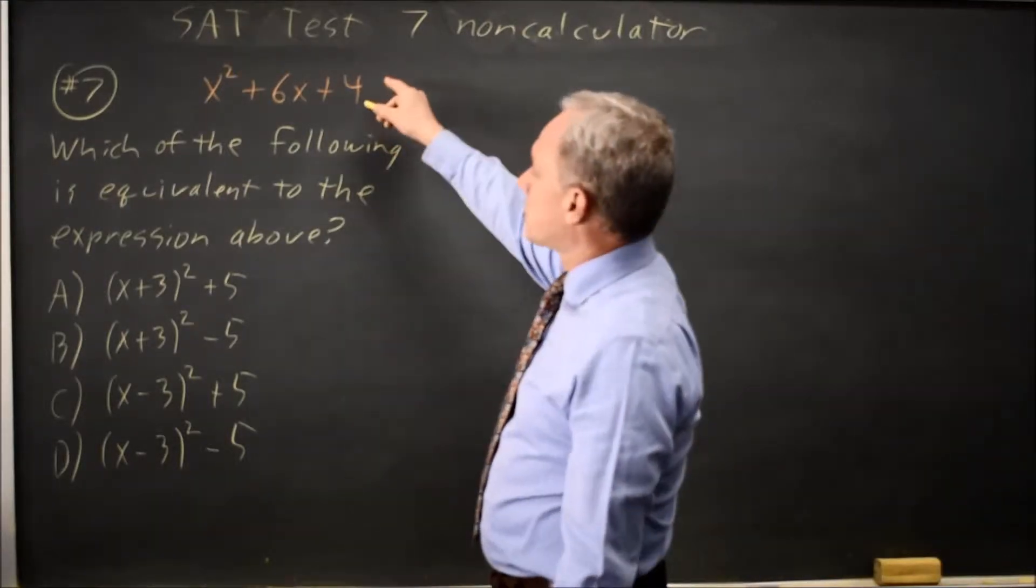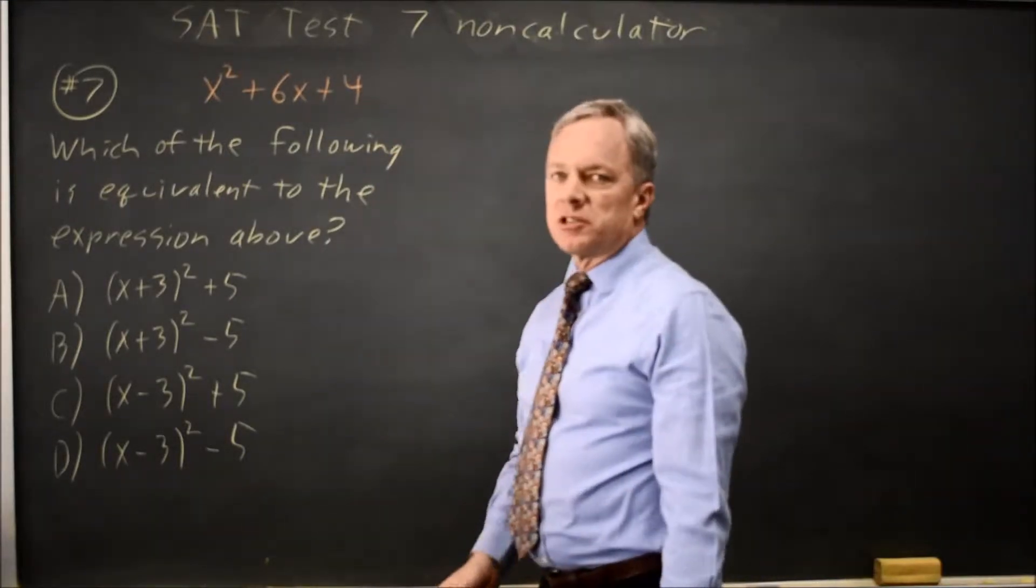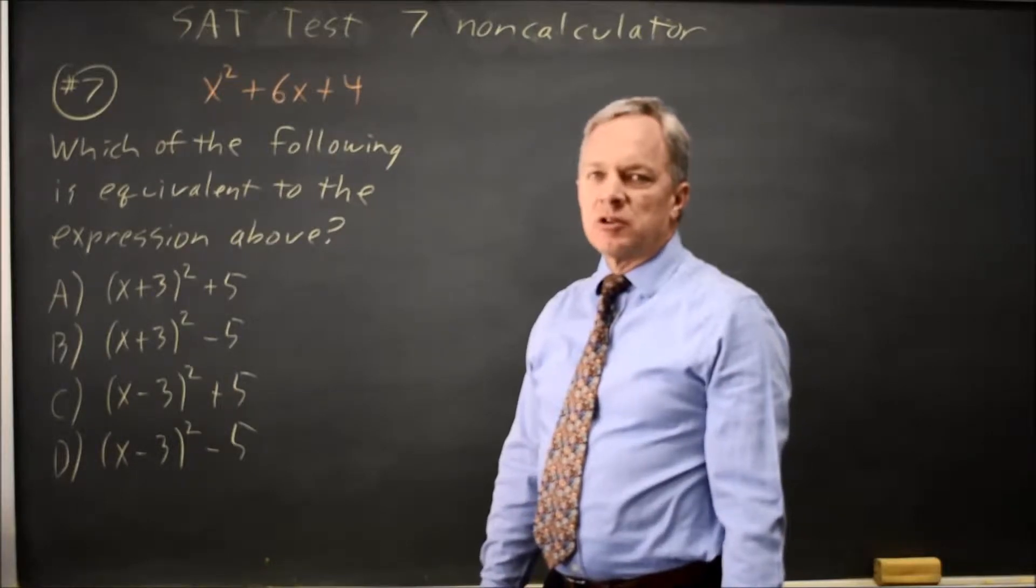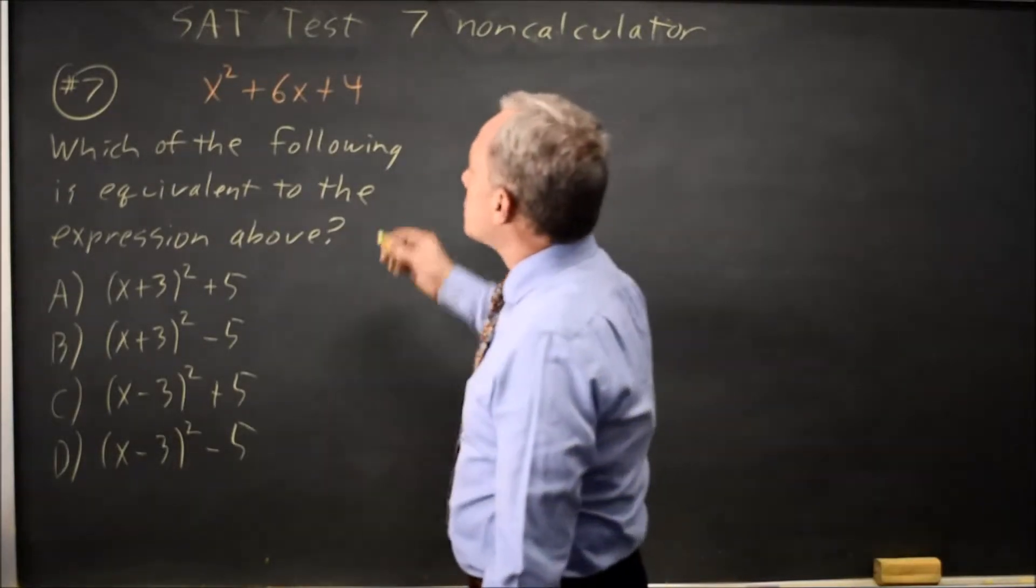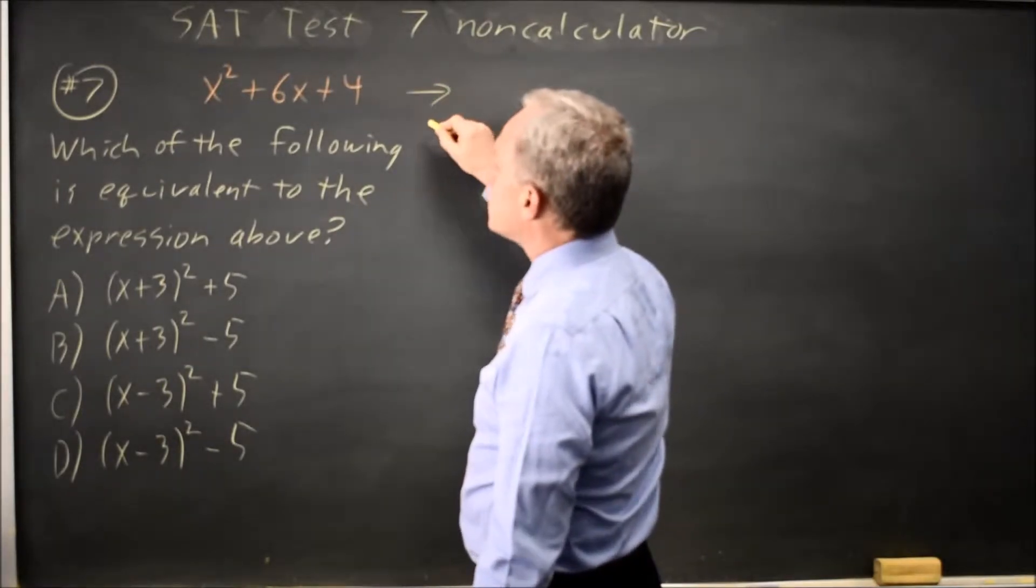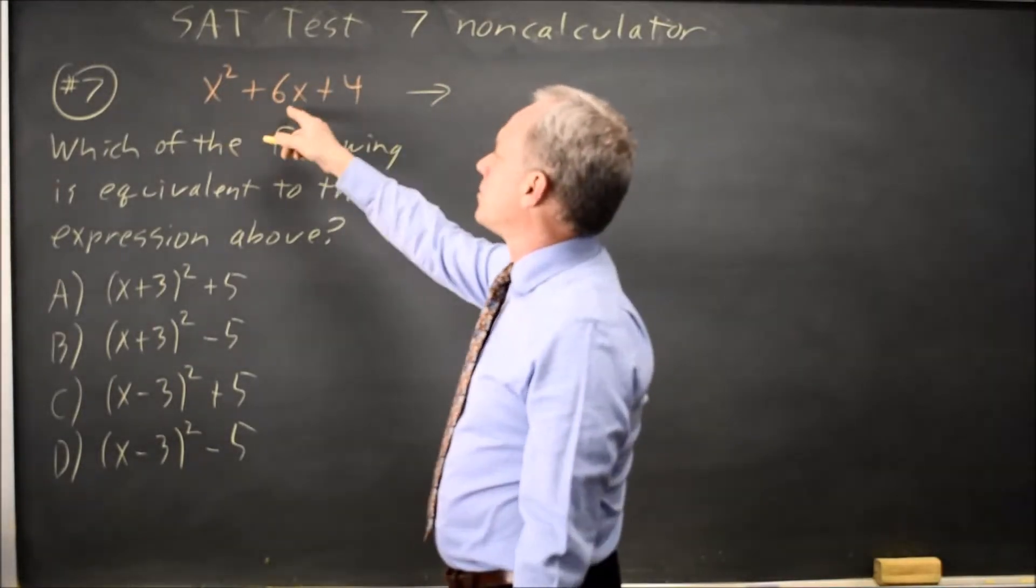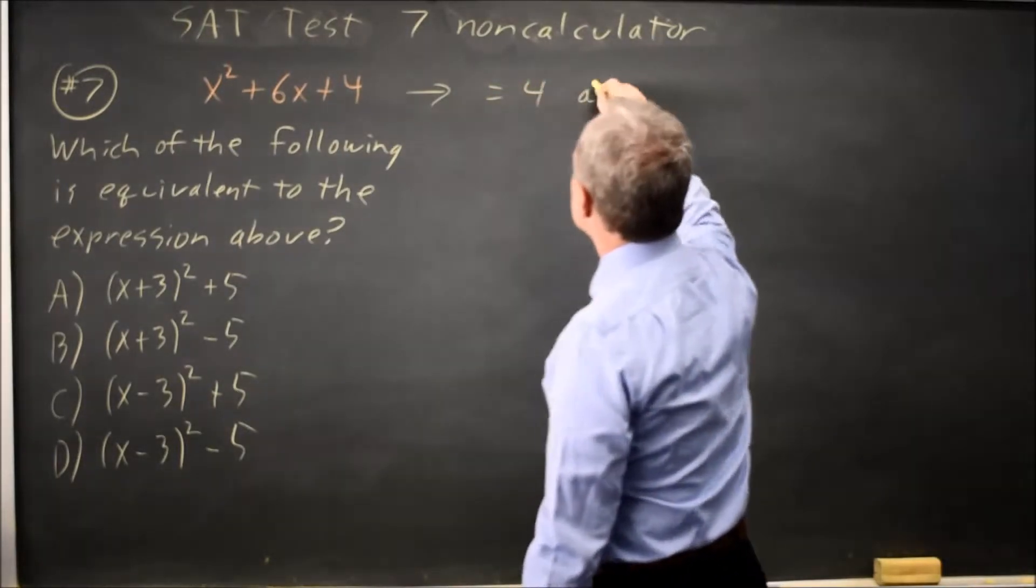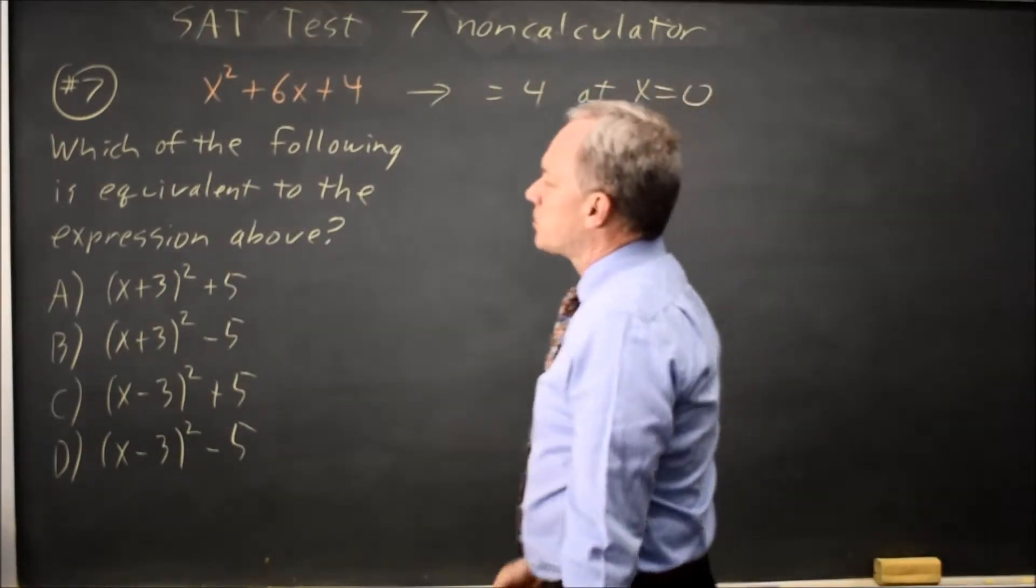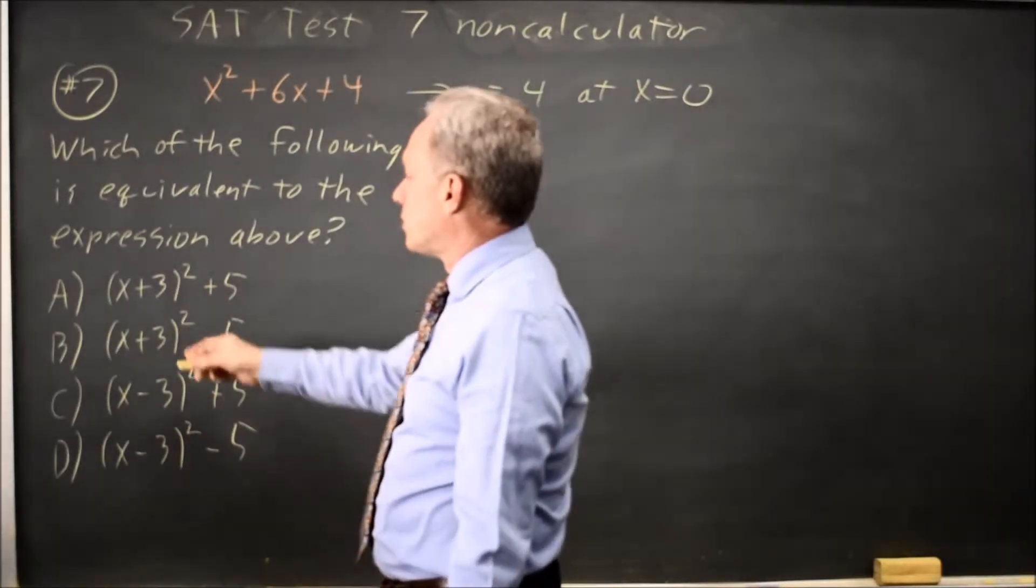I could complete the square on this, but it's easier to use an old method they used to teach for checking that your simplifications were equivalent. I'm going to substitute in x equals 0, and at x equals 0, this is 0 plus 0 plus 4. So let's substitute 0 in here and see which ones also give us 4.